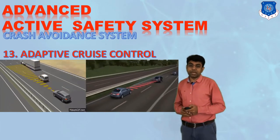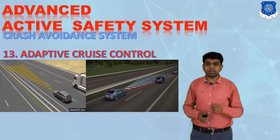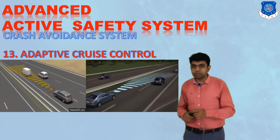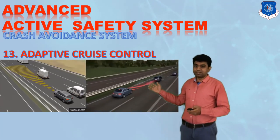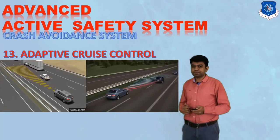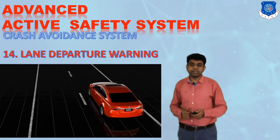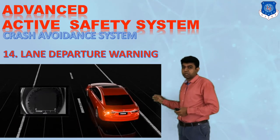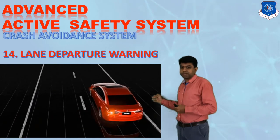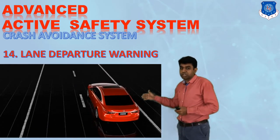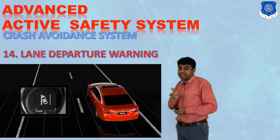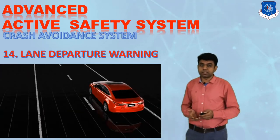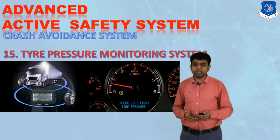The thirteenth system is adaptive cruise control. You can set the vehicle in cruise control mode, and it will take over command and maintain proper lane travel. The fourteenth system is lane departure warning. If you are traveling at constant speed and suddenly feel drowsy, the vehicle may deviate from its lane. As soon as it starts deviating, the system raises an alarm — that is the lane departure warning.